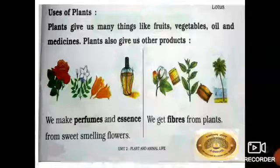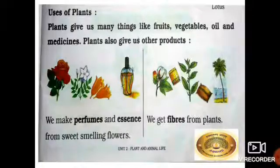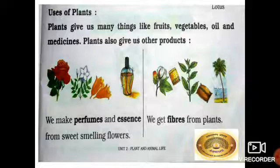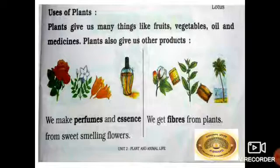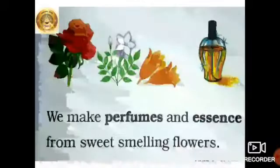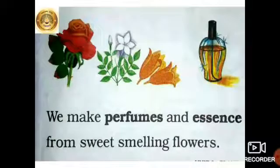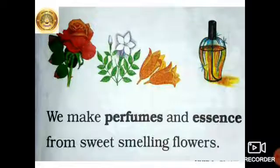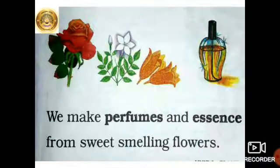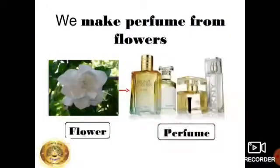So let's begin. Plants give us many things like fruits, vegetables, oil, and medicines. Plants also give us other products. See this picture — what can you see? You can see flowers and perfume. Where do we get flowers and perfume? We get all this from plants. We make perfume and essence from sweet-smelling flowers.